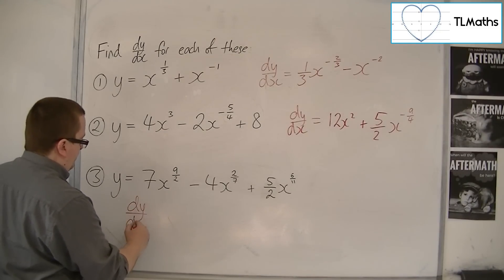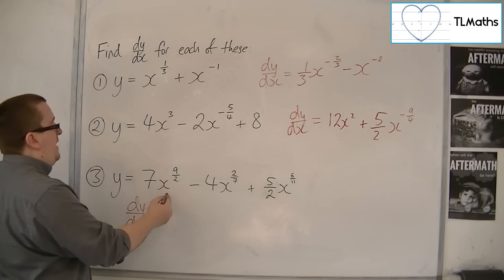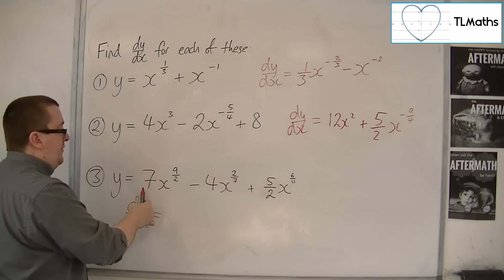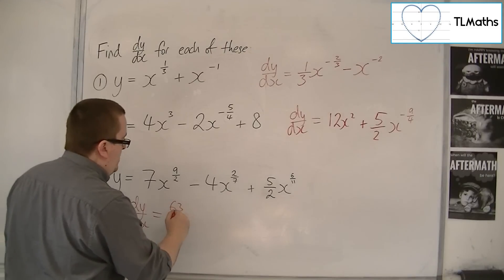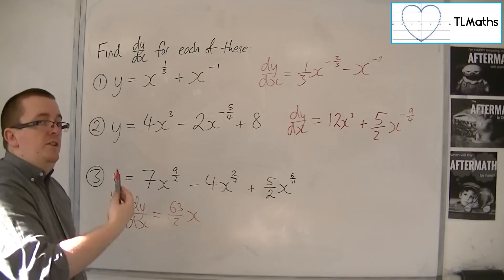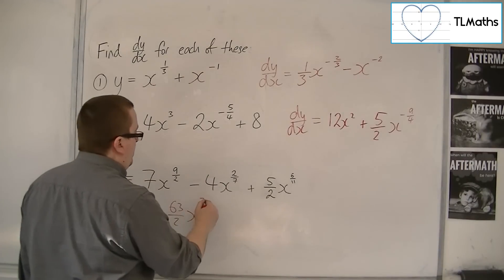For this last one, we've got 7x^(9/2). So nine halves comes down and multiplies with the seven, so that's 63 halves. And then you need to take one off the power. Nine halves take away one is seven halves.